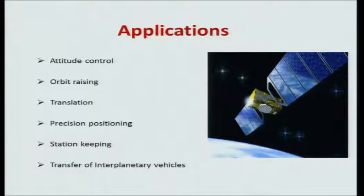Let us look at some applications of electric propulsion systems. First and foremost is attitude control. In outer space when a satellite is moving, there is not much drag, so whenever it goes out of a particular attitude, you require a very small amount of thrust to bring it back — that can be done very effectively by electric propulsion devices. Secondly, orbit raising — in any mission you go in steps from one orbit to another, and a small push is good enough to transfer between orbits.